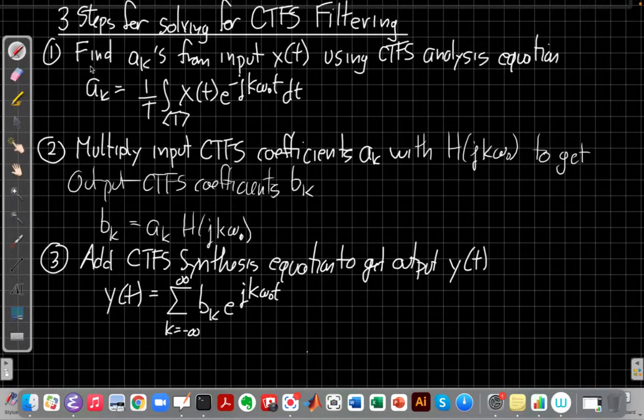Alright, so step 1 here, we have the a sub k's. I haven't shown you all the steps, but it's very similar to the one I've done before. So now we're moving on to step 2. We're multiplying the a sub k with b k to get the output coefficients for each value of k. So let's see how that looks.